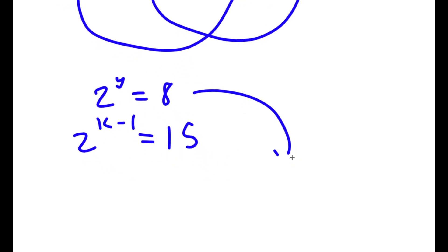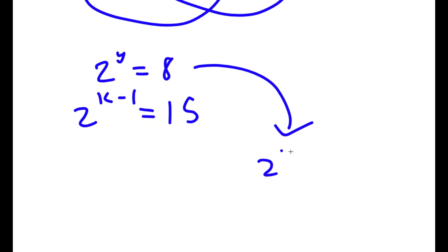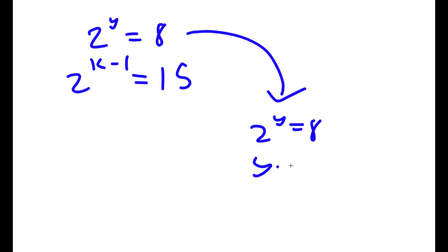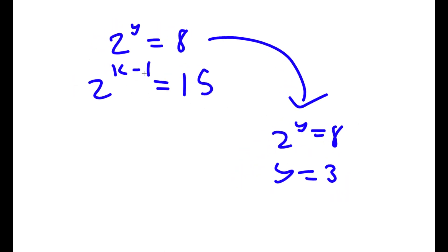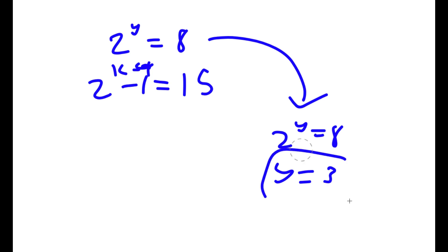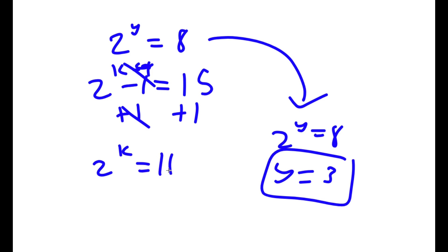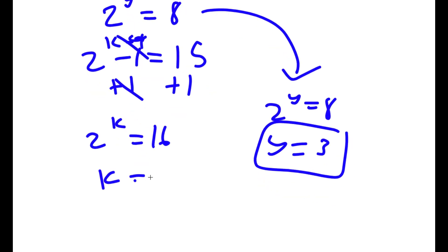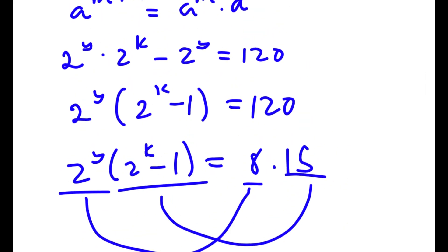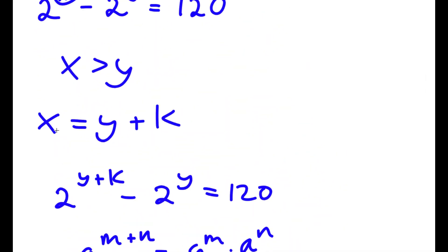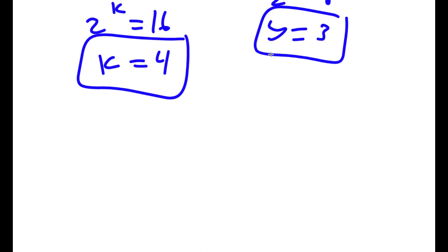Let's first solve 2 to the power of y equals 8. We obviously know that y equals 3, because 2 to the power of 3 is equal to 8. For 2 to the power of k minus 1 — and the negative 1 is not part of the exponent — I'm going to add 1 on both sides, so I get 2 to the power of k equals 16, meaning k equals 4. Remember we set x equals y plus k, and k is 4, y is 3, meaning x is 7.